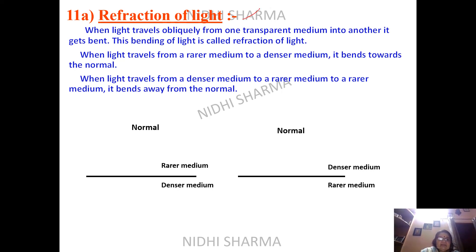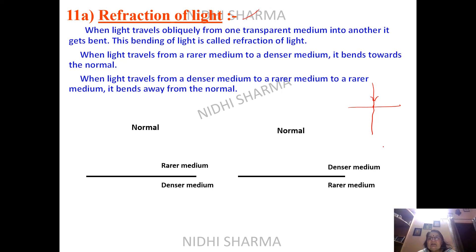Refraction of light is a process when light travels obliquely, meaning at any angle. Suppose you have an interface and a ray coming normally — it will not bend; it will directly enter into the other medium and go straight. But if the ray is coming obliquely from one transparent medium to another, it gets bent. This bending of light is called refraction of light.